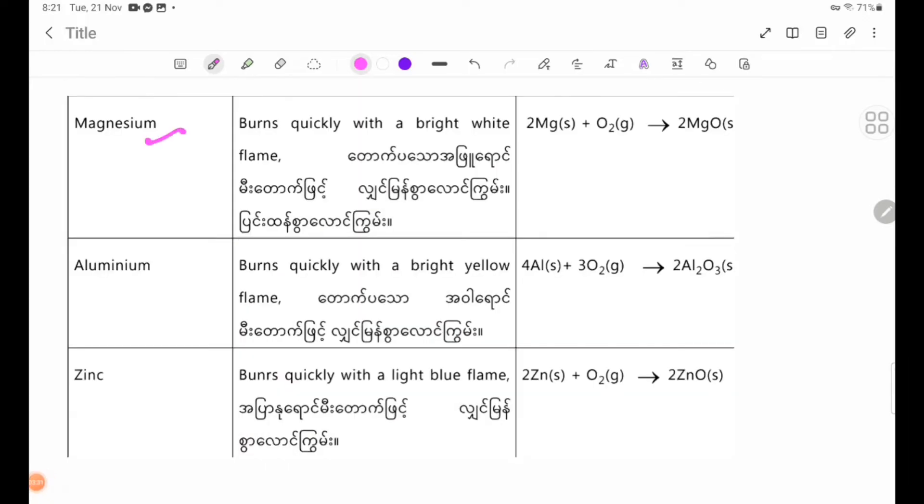Magnesium burns quickly with a bright white flame. The reaction is: 2Mg(s) + O2(g) → 2MgO(s).